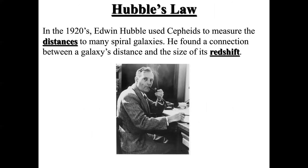In 1920, Edwin Hubble used Cepheid variables or Cepheid stars to measure the distances to many nearby spiral galaxies. He found the connection between a galaxy's distance and the size of its redshift. Cepheid stars were used by Hubble to determine distances — to the Andromeda galaxy and similarly to different spiral galaxies. He used different numbers of Cepheid variables to measure distances to many spiral galaxies, not only Andromeda. Interestingly, he found a nice relationship between a galaxy's distance and the size of its redshift.